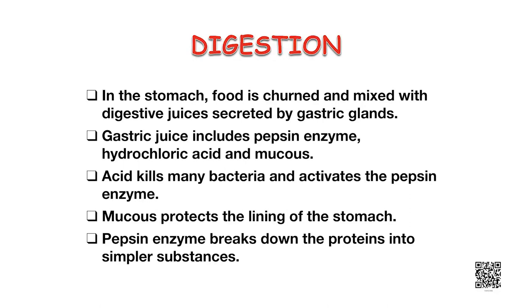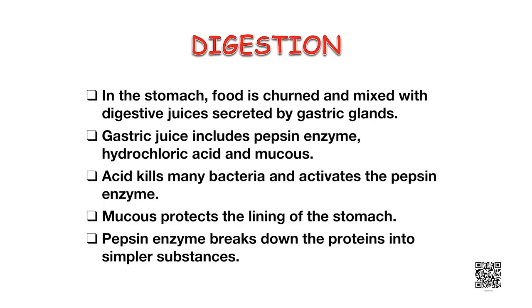The stomach is a large organ which expands when food enters into it. The muscular walls of the stomach help in mixing the food thoroughly with more digestive juices. The gastric glands of the stomach release gastric juice which contains hydrochloric acid, enzyme pepsin, and mucus. The hydrochloric acid creates an acidic medium which facilitates the action of the enzyme pepsin. The mucus protects the inner lining of the stomach from the action of the acid. Pepsin enzyme helps in the digestion of proteins. The exit of food from the stomach is regulated by a sphincter muscle.